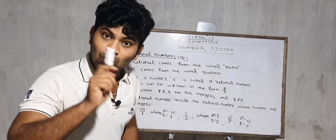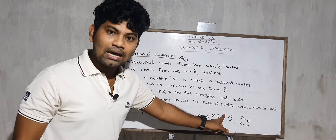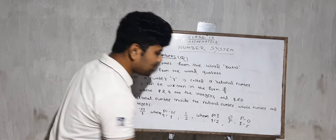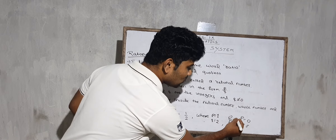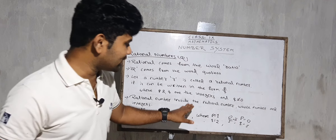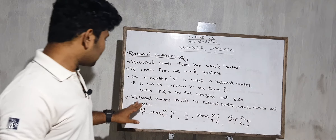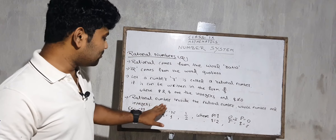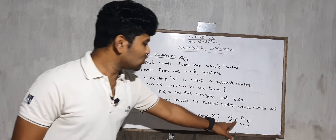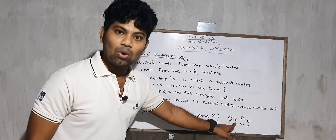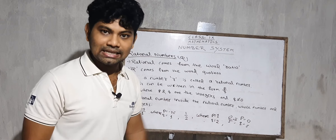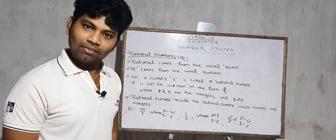The denominator should not be zero, but the numerator can be zero. 0 by 5 equals 0, so 0 is also a rational number because 0 is a whole number, and rational numbers include whole numbers. That's why 0 is also a rational number.